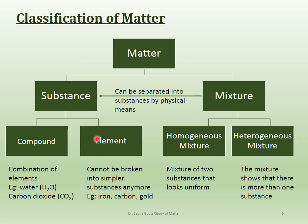A combination of elements gives us compounds. A compound is still a substance because it is pure. For example, water is a combination of hydrogen and oxygen but is still considered a substance because it can exist by itself. So elements and compounds are both what we call substances.